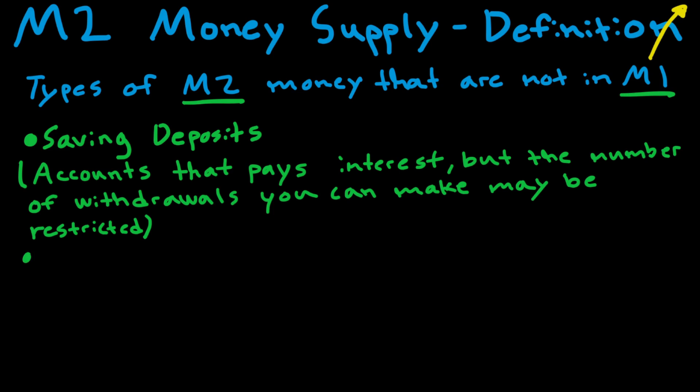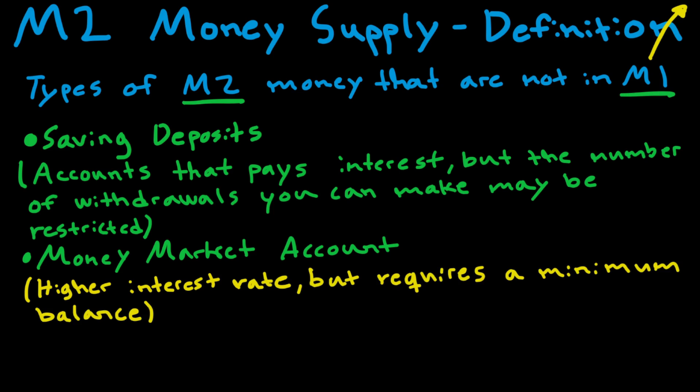Then we have something called money market accounts. This one is pretty similar to the savings deposits accounts, but the difference here is that it pays a higher interest rate but requires a minimum balance. The pro here is that you get more interest rate than in the savings account. But the con is that it requires a certain amount of money in the account.